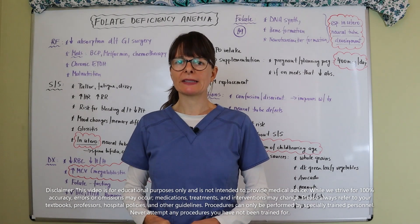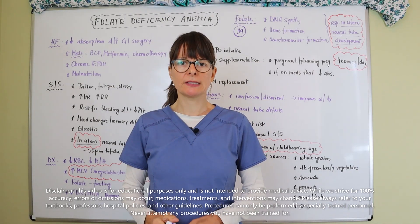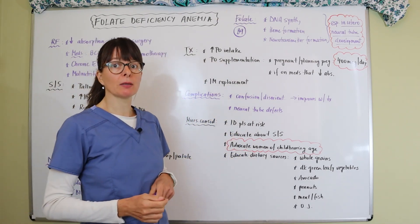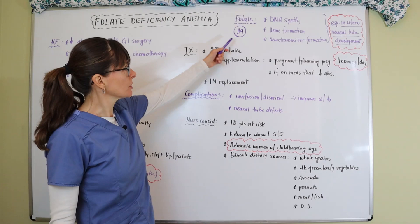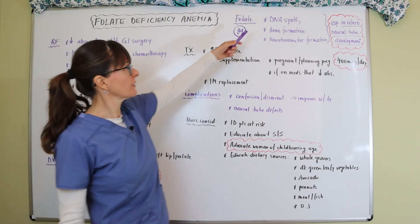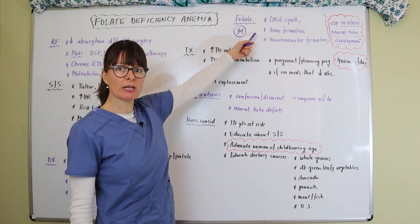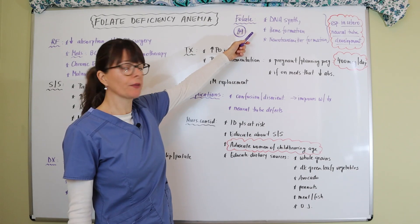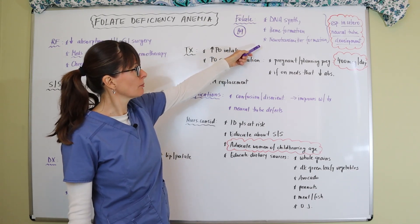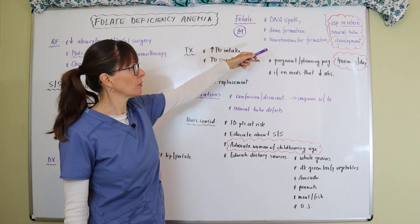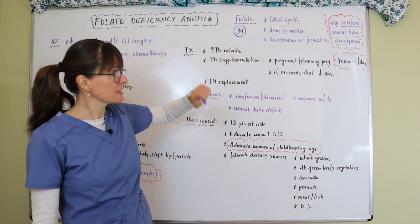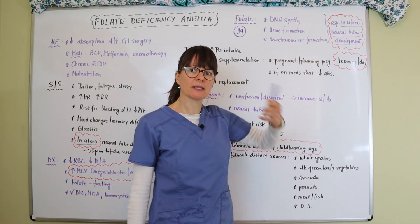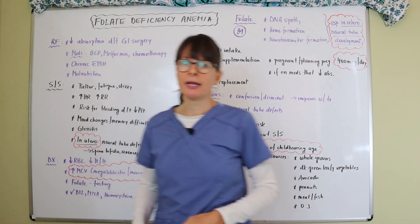Welcome to Nursing School Explained, in this video on folate deficiency anemia. Folate, or folic acid, is vitamin B9 and is responsible for DNA synthesis, heme formation which is the iron portion of hemoglobin on the red blood cell, and neurotransmitter formation. It is specifically important in utero for neural tube development, which we will continue to discuss throughout this video.